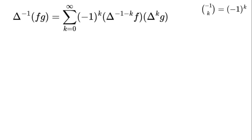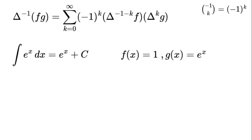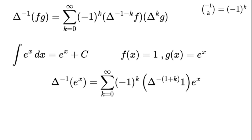Let's find the antiderivative of e to the power of x using f(x) equals 1 and g(x) equals e to the power of x. Delta to the power of negative 1 times e to the power of x equals the sum from k equals 0 to infinity of negative 1 to the power of k times the integral of 1 to the power of 1 plus k times e to the power of x.